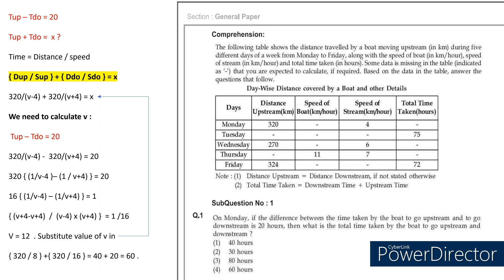We know that time equals distance divided by speed. Converting the second equation: upstream time becomes upstream distance divided by upstream speed, and downstream time becomes downstream distance divided by downstream speed, equal to X. From the table on Monday, the distance traveled upstream is 320, which also means downstream distance is 320. So it becomes 320 divided by upstream speed. For upstream, we subtract stream speed from boat speed — that is speed of boat minus speed of stream. For downstream, we add them. So it becomes 320 divided by (V minus 4) plus 320 divided by (V plus 4), equal to X.